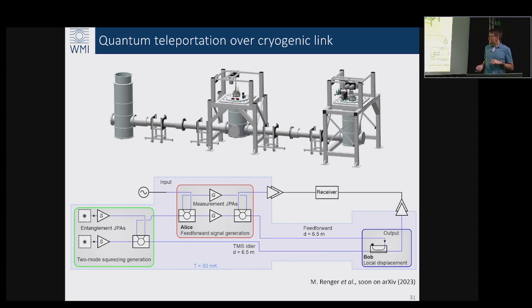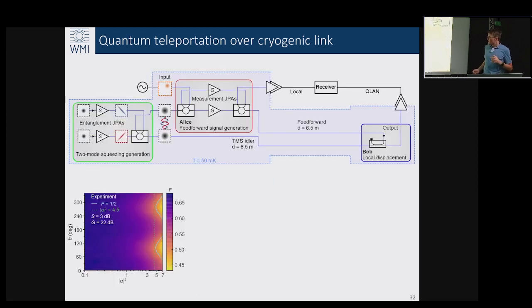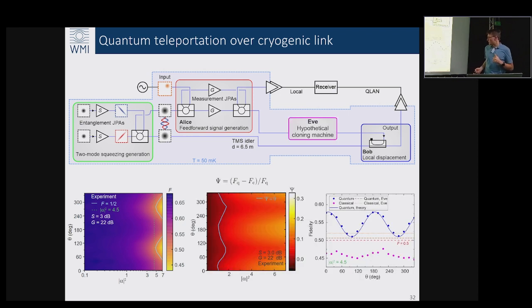This is why entanglement is preserved. Technologically it means good news - maybe millikelvin links are not needed, maybe we can just operate at the temperatures of Kelvin. Then what we did was full teleportation by first distributing these two-mode squeezed states between two fridges, inserting some unknown coherent state in one fridge which we called Alice, doing the feedforward which was sent via the feedforward link to Bob who did a local displacement conditioned on that signal.